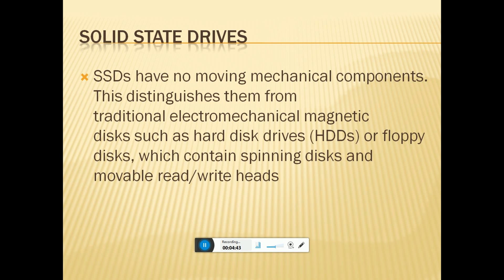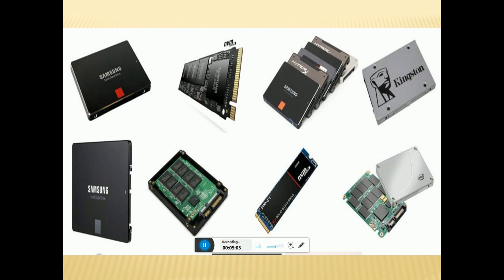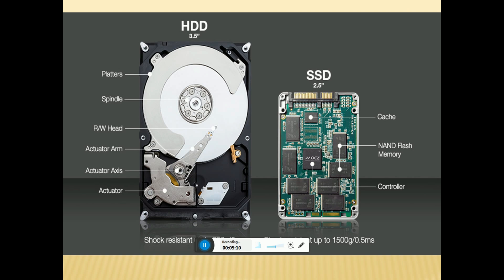Solid State Drives, SSDs, have no moving mechanical components, in contrast to traditional electromechanical magnetic disks such as hard disk drives and floppy disks, which contain spinning disks and movable read and write heads. This picture shows different types of hard disks and SSDs. This is the 3.5-inch hard disk, and this one is the 2.5-inch SSD. I will explain the differences.